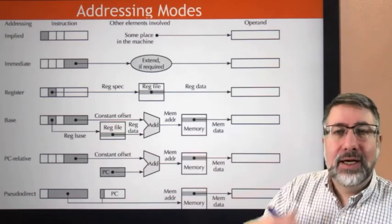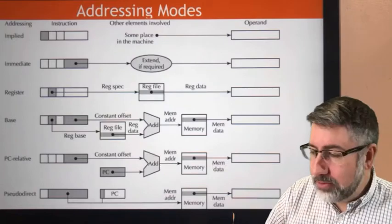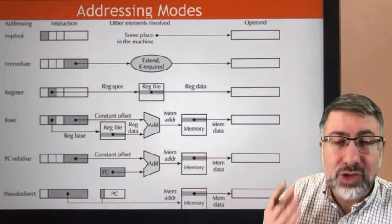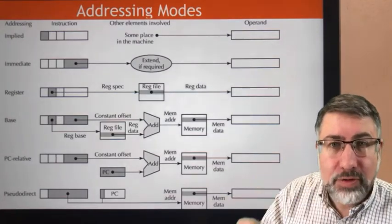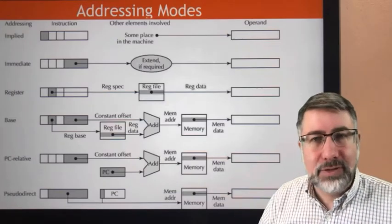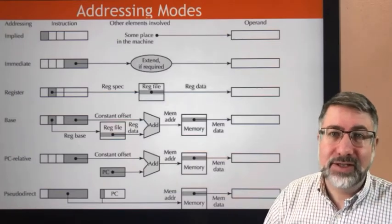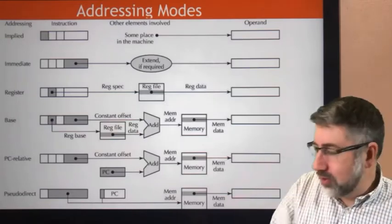If we do jump and link, this says somewhere in the machine we're going to specify that we want to store the return, or the program counter, the current value of the program counter, in the register specified as the return address so that we can get back after our jump.